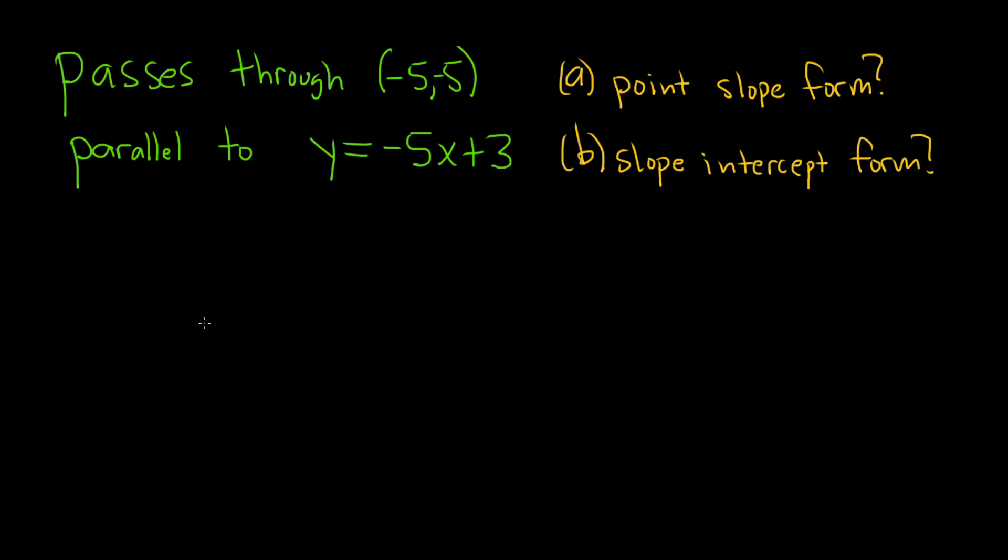In this problem we're going to find the equation of a line that passes through this point and is parallel to this line. And we need to write our answers in point-slope form and also in slope-intercept form. Let's go ahead and work through its solution.